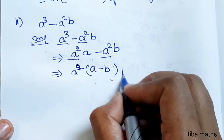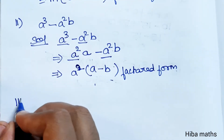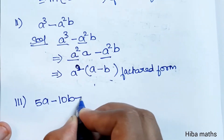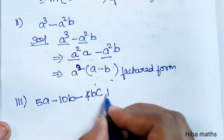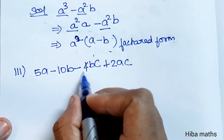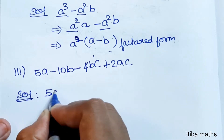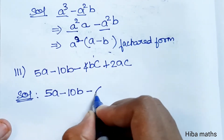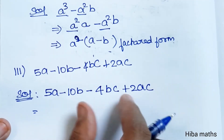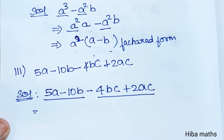Next question: 5a minus 10b plus 4bc plus 2ac. In the solution, the question is 5a minus 10b minus 4bc plus 2ac. We will group this into two pairs of two terms. 5 and 10 share a factor of 5, and 4 and 2 share a factor of 2.